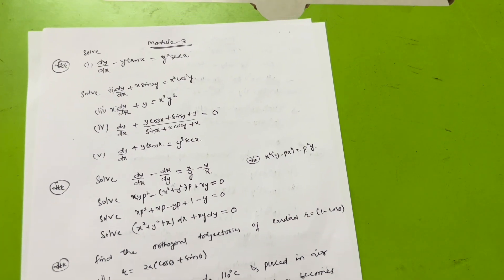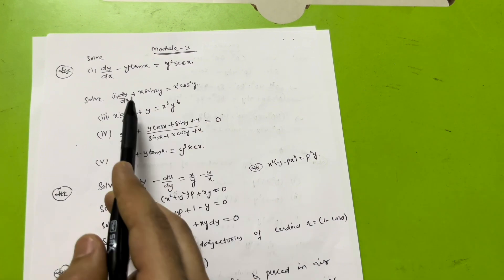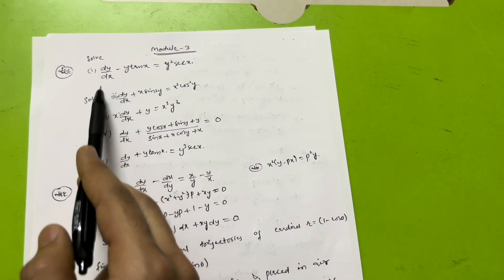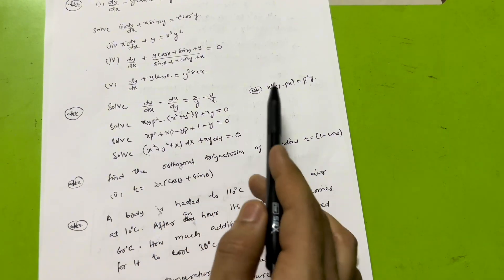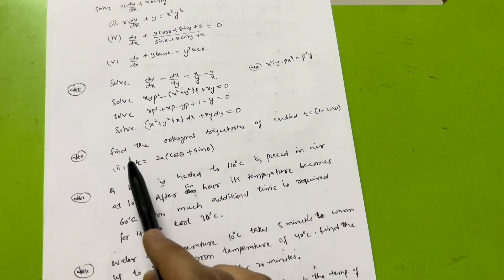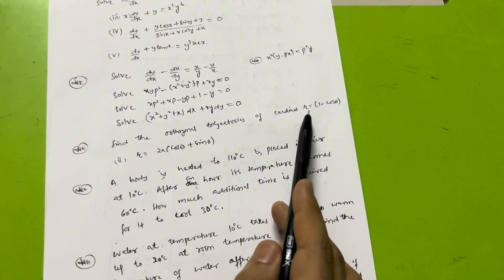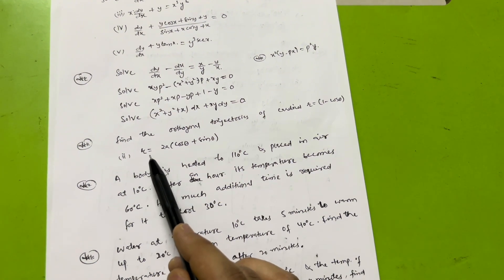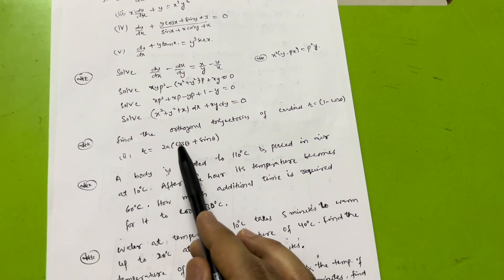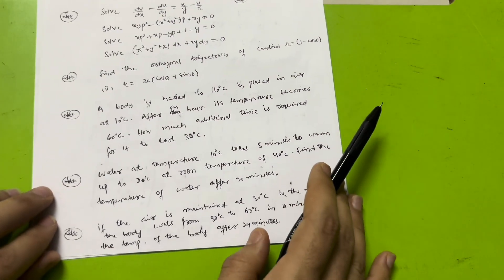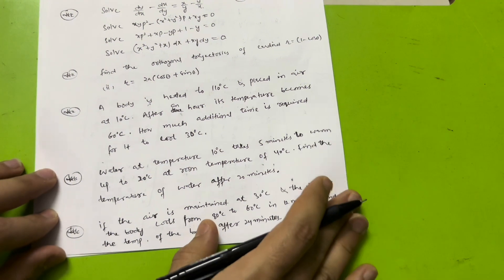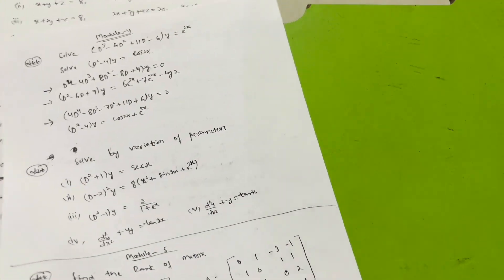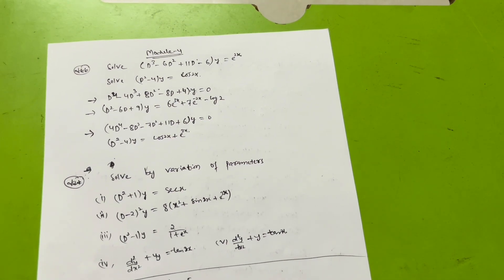Now Module 3 covers problems on ordinary differential equations — pause the video to note these down or take a screenshot of the first variety. Next, solving for p-variety: I have taken five questions here — note down or take a screenshot. Also super important: orthogonal trajectories of the cardioid r = 1 − cos θ; find orthogonal trajectories of r = a(cos θ + sin θ). Take a screenshot of these three questions for Module 3.